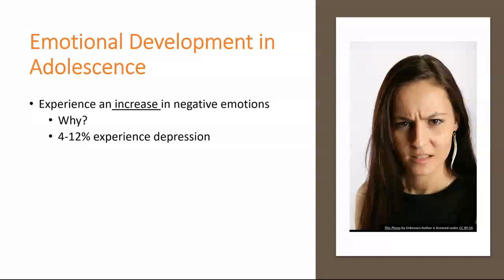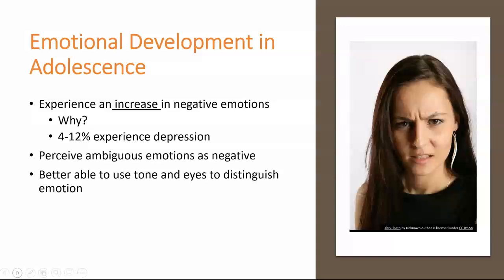During adolescence, there don't seem to be any new developmental milestones in terms of emotion, although the strength and quality of emotion does change. Adolescents tend to experience an increase in negative emotions. Some researchers argue this might be the case because there is also an increase in stress, bullying, conflict in romantic relationships, and lack of sleep during adolescence, all of which have been associated with negative emotions. Beyond feeling more negative emotions, adolescents are also more likely to perceive ambiguous emotional expressions as more negative. This has been tied to the fact that adolescents tend to not get enough sleep and because of maturational changes in brain regions, including the prefrontal cortex, that are involved in regulatory processes and more nuanced judgments.